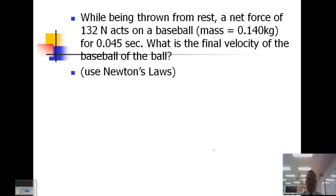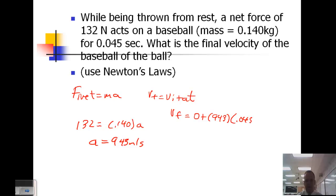This next problem is the exact same problem, but now we want to solve it using Newton's laws. So in this case, we want to use F_net equals ma. We can use V_final equals V_initial plus at. So we'll start: 132 equals 0.140 times a. 132 divided by 0.140 gives an acceleration of 943 meters per second squared.